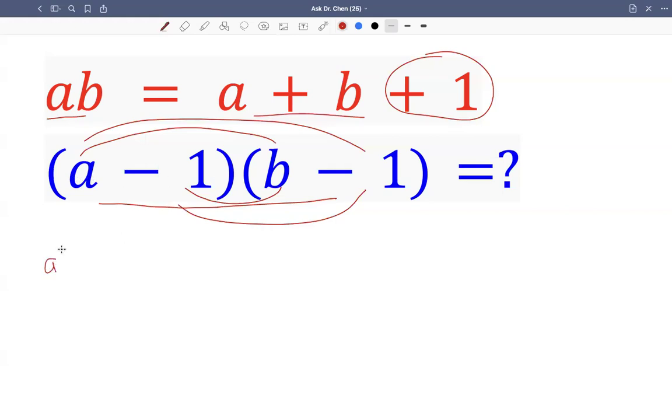So A times B, we get AB. A times negative one, negative A. Negative one times B, negative B. Negative one times negative one become plus one.